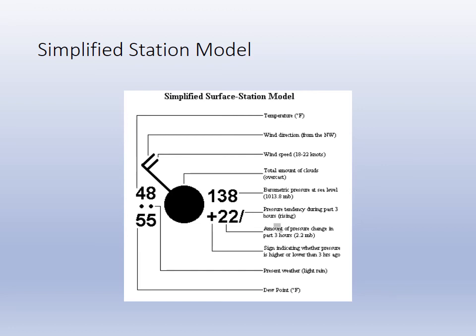Standard pressure is 1013 millibars. For barometric pressure, take the three given digits, insert a decimal, then add a 9 or 10 — whichever gets you closer to 1000. The pressure tendency — whether rising or falling — is sometimes given below. Rising pressure indicates an approaching high pressure system; falling pressure indicates a low pressure system. High pressure brings clear air; low pressure brings storms. Temperature is shown to the left in degrees Fahrenheit, with present weather given symbolically and the dew point also listed.